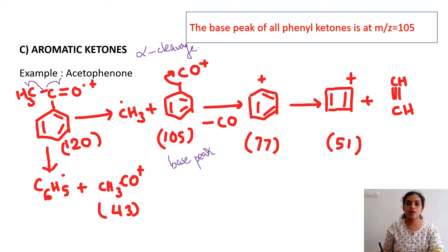The base peak of all phenyl ketones is at m/z 105. It is a phenyl ketone because one group attached is a benzene ring. For all phenyl ketones, the base peak is at m/z value 105.